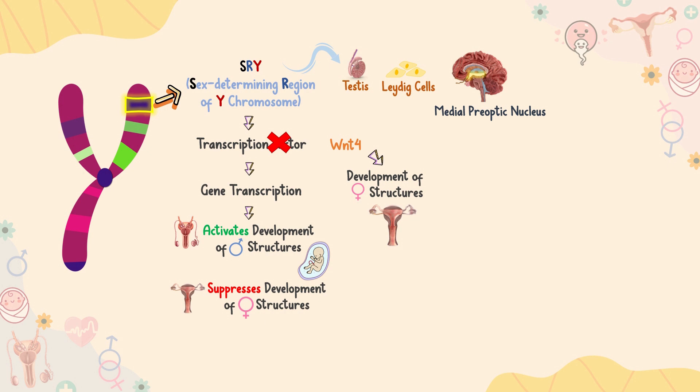The SRY gene is also thought to be responsible for the development of testes and Leydig cells, which secrete testosterone, that stimulates the development of the male genitalia and the organization of neuronal systems in the brain that are involved in sexual function and behavior.